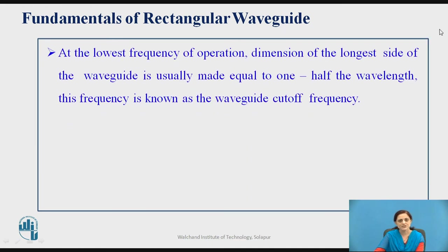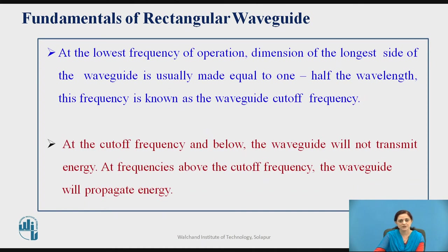At the lowest frequency of operation, the dimension of the longest side of the waveguide is usually made equal to one half of the wavelength. This frequency is known as the waveguide cutoff frequency. At and below this cutoff frequency, the signal cannot be transmitted through the rectangular waveguide.